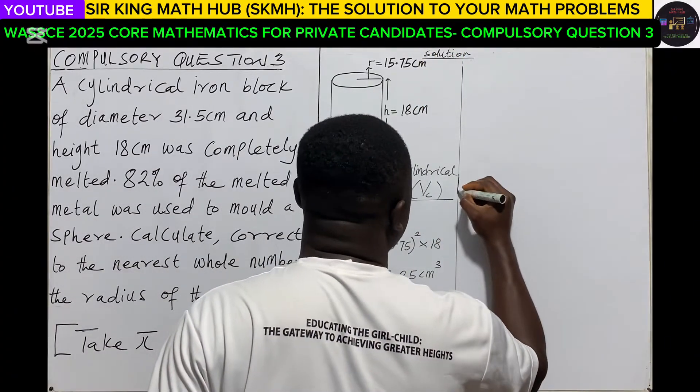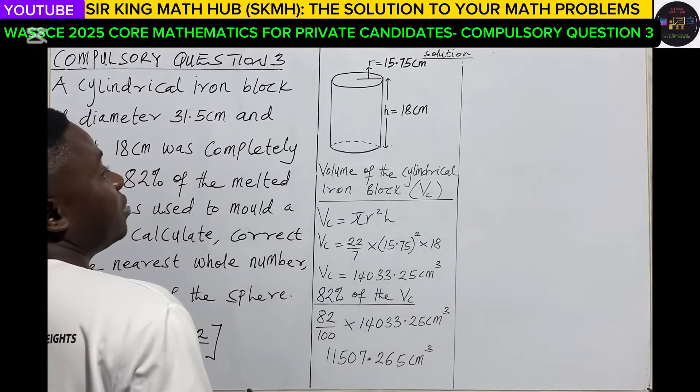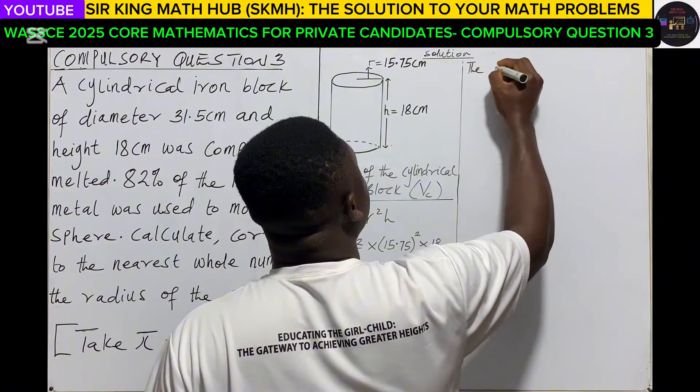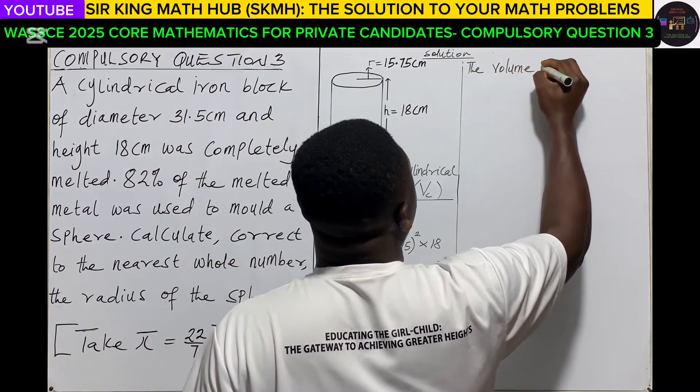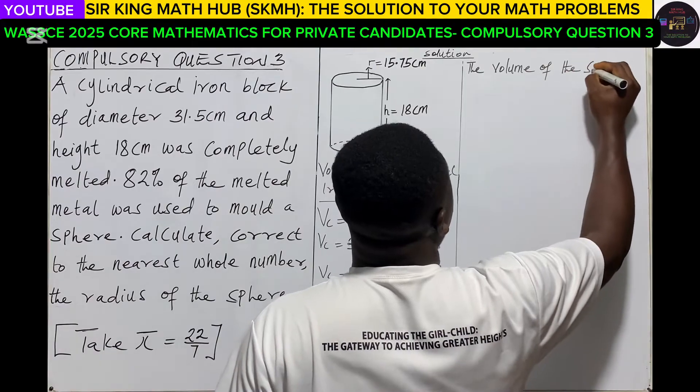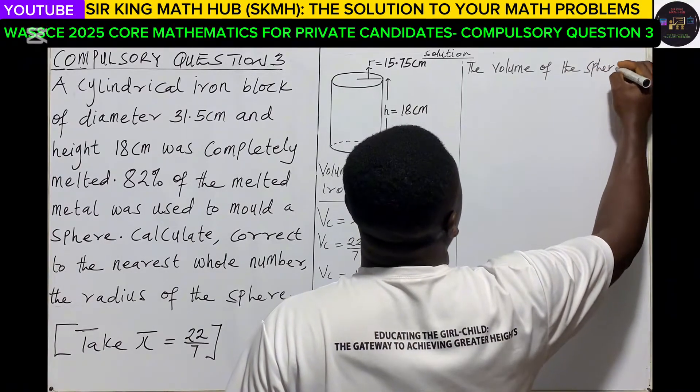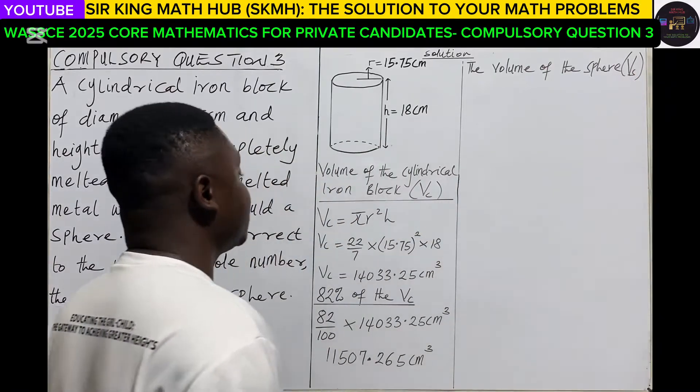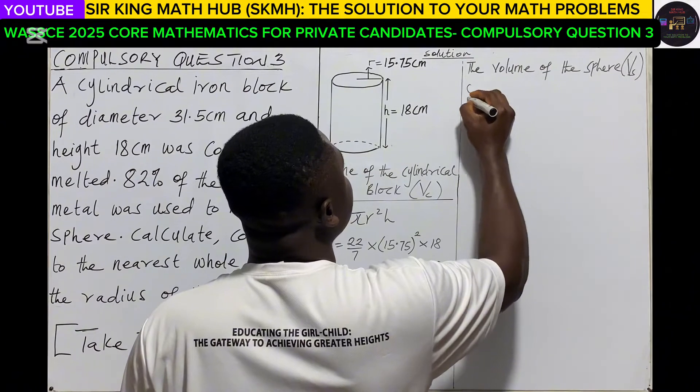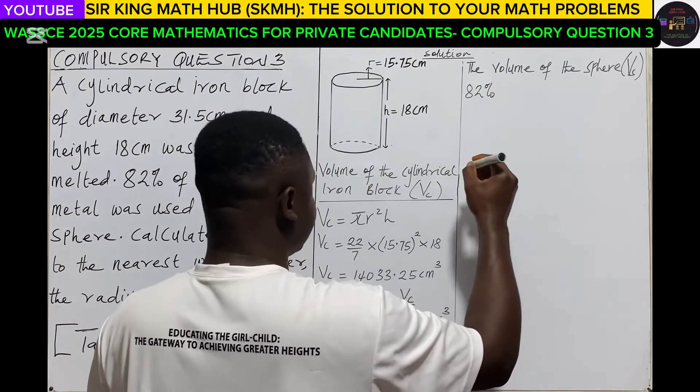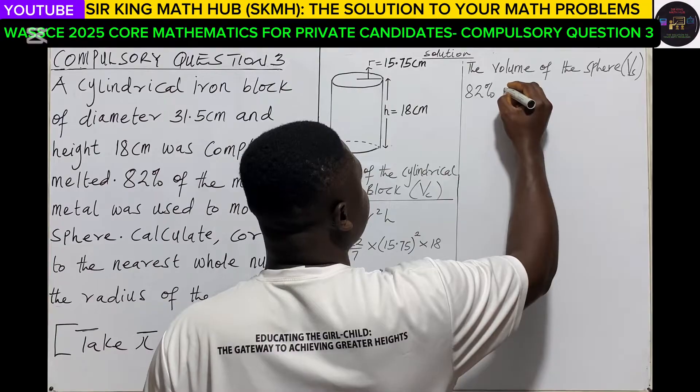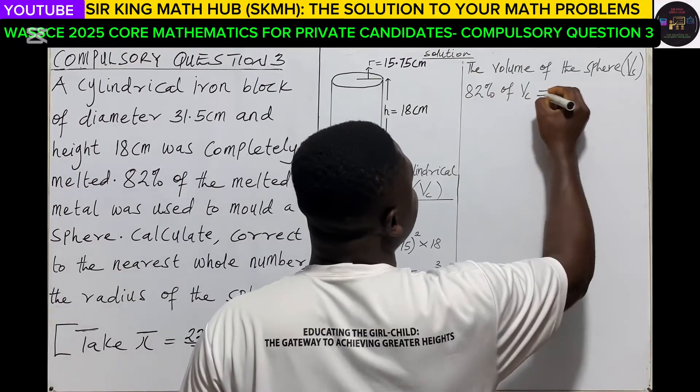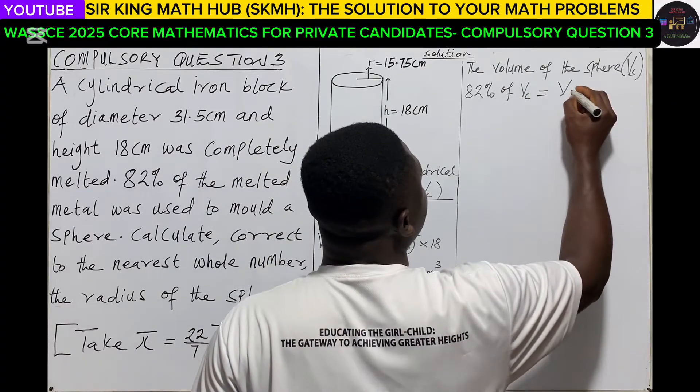So with this we can create an equation. I'm representing the volume of the sphere. So as we said, the 82% of the volume of the cylinder must be equal to the volume of the sphere.